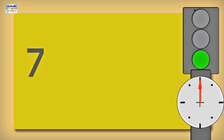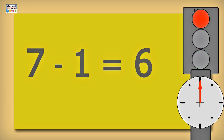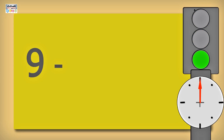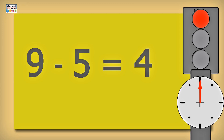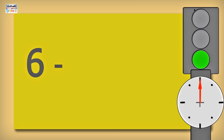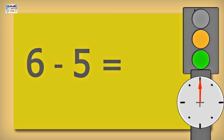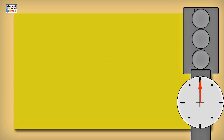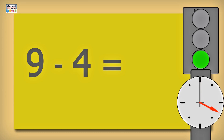Seven minus one is equal to six. Nine minus five is equal to four. Six minus five is equal to one. Nine minus four is equal to five.